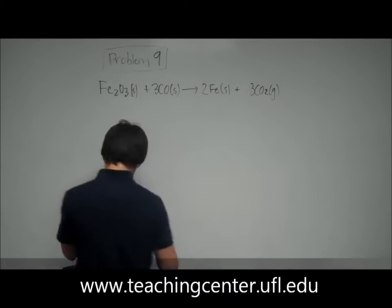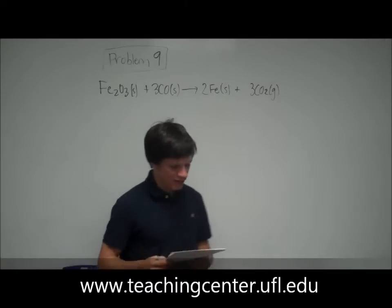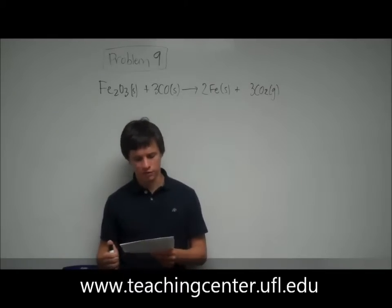So the reaction of 92.134 grams of Fe2O3 with 143.21 grams of carbon monoxide produces 2.45 grams of iron. Determine the percent yield.